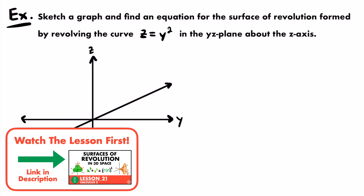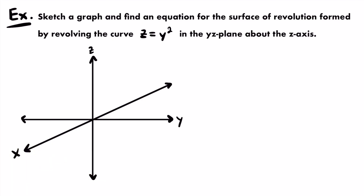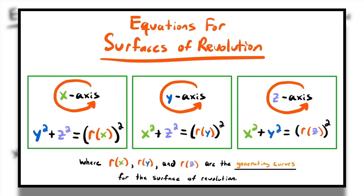To solve this problem, we need to remember the general form of an equation for a surface of revolution in 3D space. It depends on the axis of revolution. When your generating curve is revolving around the x-axis, your equation will be y squared plus z squared equal to the radius function in terms of x squared — in other words, your generating curve in terms of x squared. So if you're revolving around the x-axis, your radius function will be in terms of x, and it will be equal to the sum of the other two variables squared.